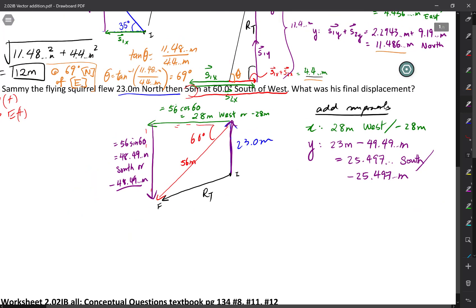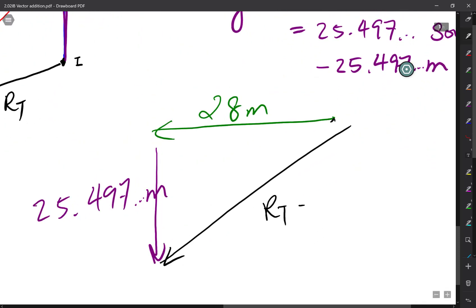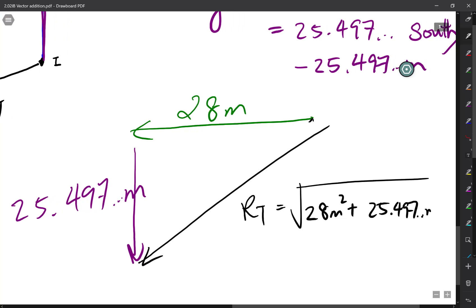Now I'm going to draw my resultant vector using my two added up components starting with 28 meters west. It actually doesn't matter which order you do this in, but I'm just going to do it this way from top to bottom. Then I go down south 25.497 dot dot dot meters, and then my shortest distance between the initial point and the final point is this guy, which is my resultant vector, and my resultant vector will therefore be the square root of 28 meters squared and 25.497 dot dot dot meters squared.